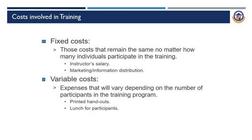Basically, cost is classified into two categories: fixed cost and variable cost. Fixed cost remains constant — remains the same — no matter how many individuals participate in the training. Examples include instructors' or trainers' salary, marketing information, and distribution. These are fixed costs and they remain the same at any time.